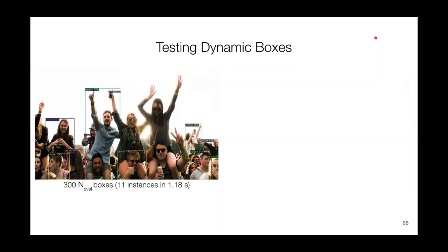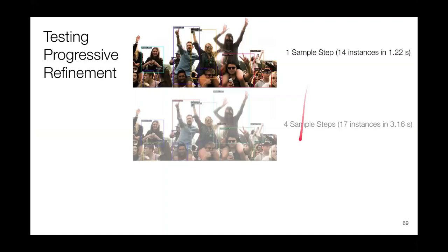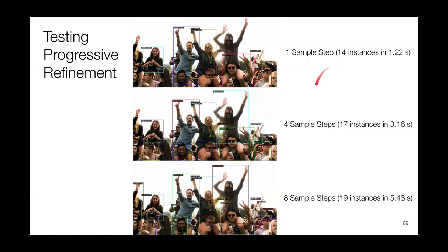Next, we tested the dynamic boxes claim. We initialized an image with 300 random box proposals and found 11 instances of people. As claimed in the paper, raising the number of proposals allowed us to find more instances of people. Finally, we tested the progressive refinement claims using the same image, running it for one, four, and eight sample steps. The increase in sampling steps did increase the ability to bound objects — from 14 to 17 to 19 — but it dramatically increased inference times considerably more than the increase in objects detected.